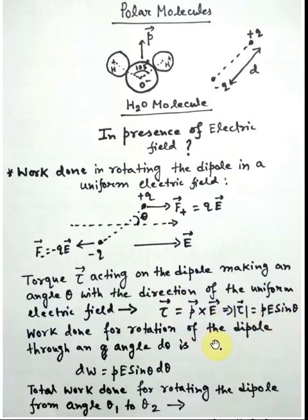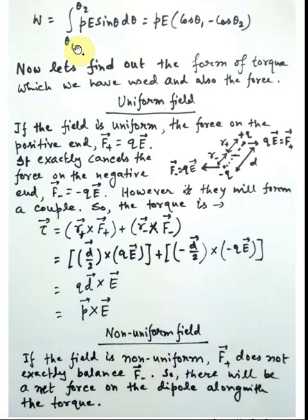What will be the work done? Work done is τ dθ, so dW = PE sinθ dθ if we want to rotate the dipole by dθ. The total work done, if the dipole rotates from initial angle θ₁ to final angle θ₂, will be W = PE(cosθ₁ − cosθ₂).